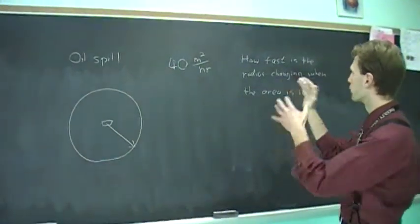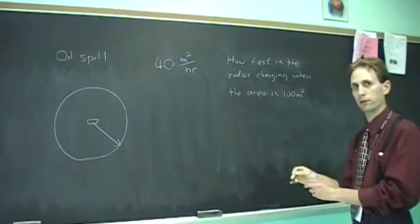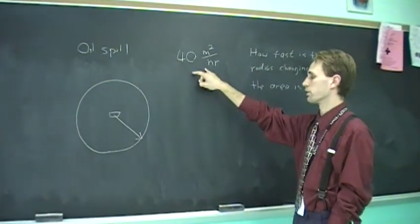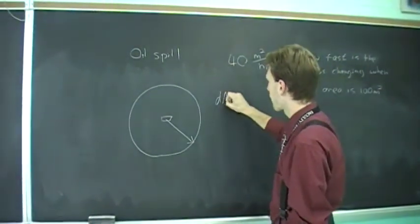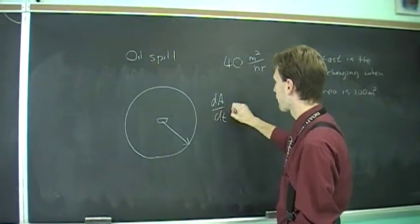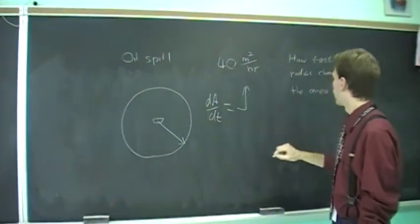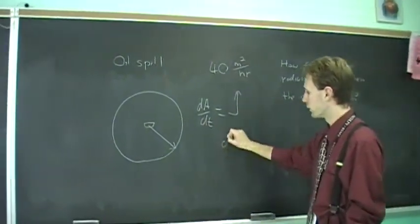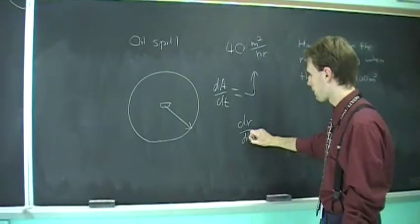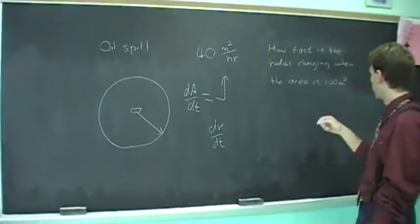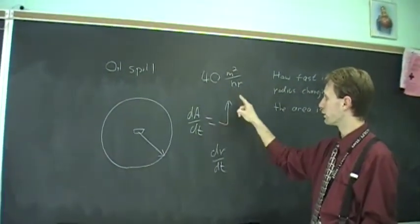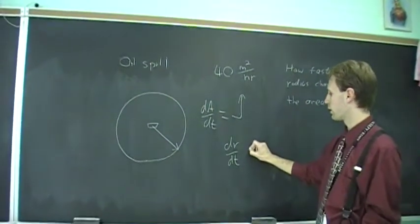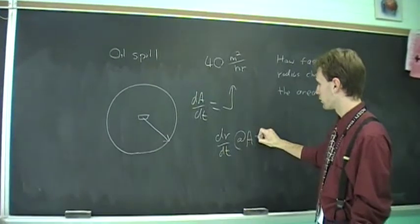You have to interpret this information and put it in calculus form. When we say that the rate of change of area is 40 square meters per hour, that's dA/dt. And when they ask how fast is the radius changing, they want to know what is dr/dt. They give you that the area is 100 square meters, and they want to know what is the rate of change of the radius at area equals 100.